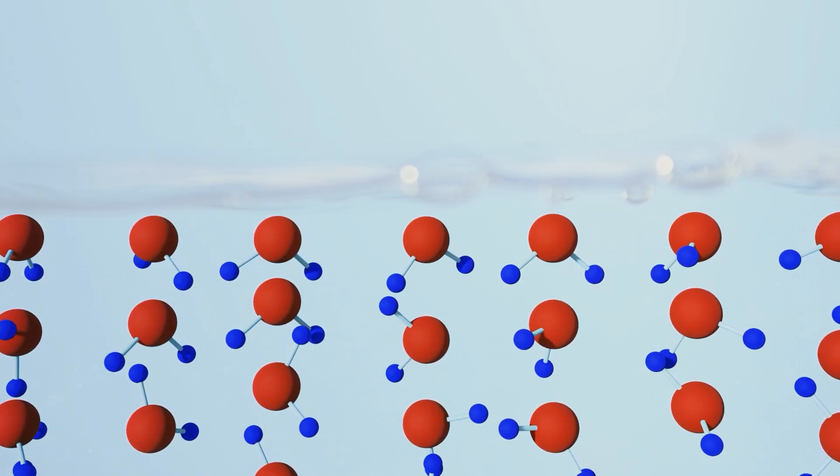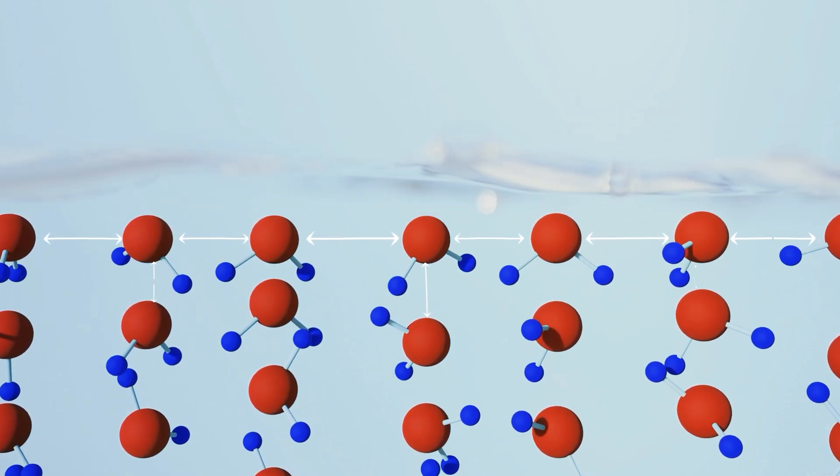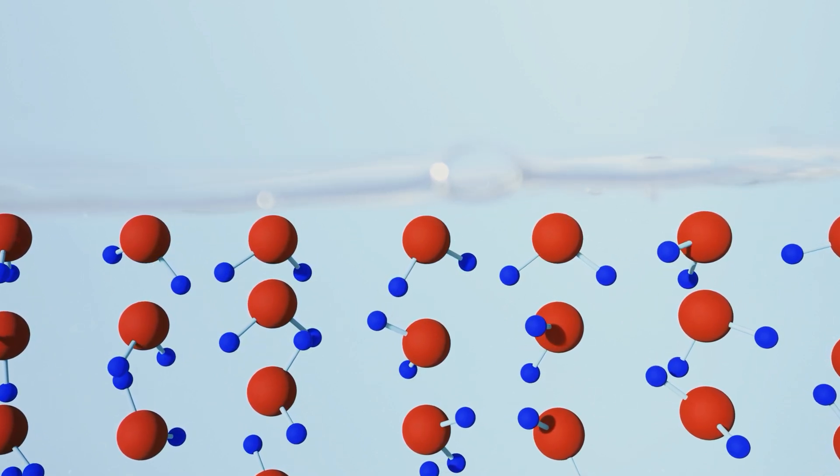The surface molecules are pulled more strongly by their neighbours beneath and next to them. This creates tension at the water's surface, a type of invisible and elastic skin.